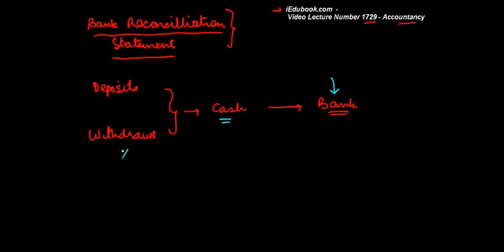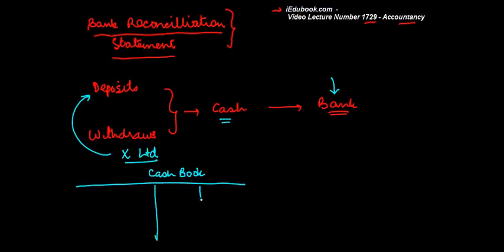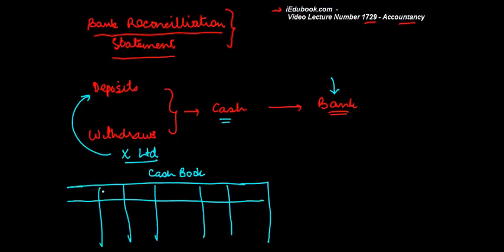Let's say for example, X-Limited deposits some money with the bank. When X-Limited prepares its cash book, and when I say cash book, I am talking about a double column cash book where you have a bank column and a cash column. So, let's say this is cash column, this is bank column.